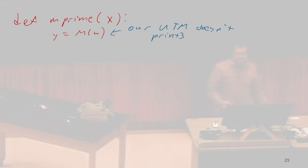That seems like a reasonable assumption, that universal Turing machines shouldn't need to print things. They just give output. They don't need to have side effects if we don't want them to. So we're just going to assume our universal Turing machine doesn't print 3. This first line, Y equals M on W, that's not going to print 3.